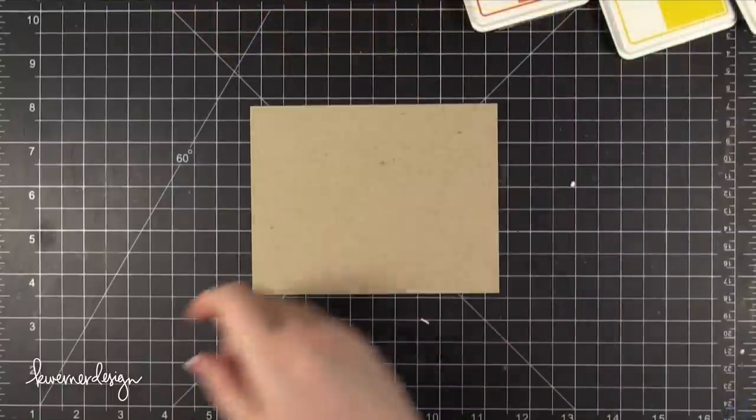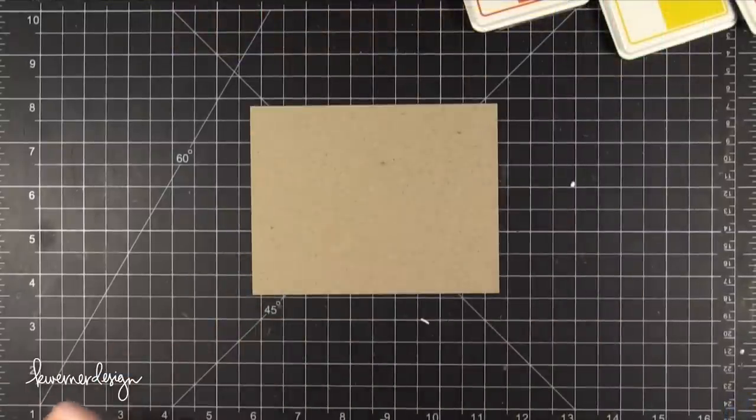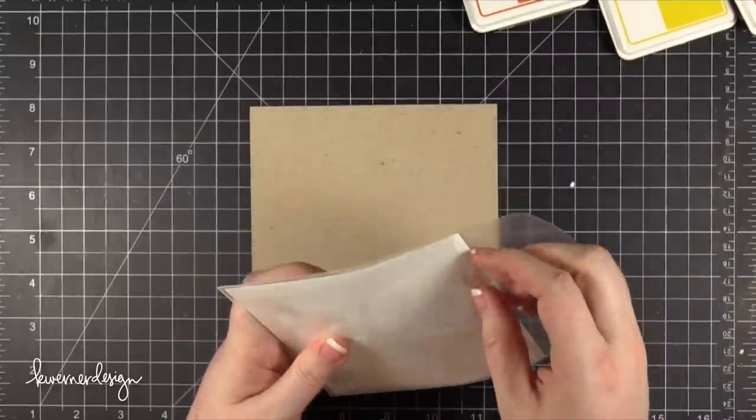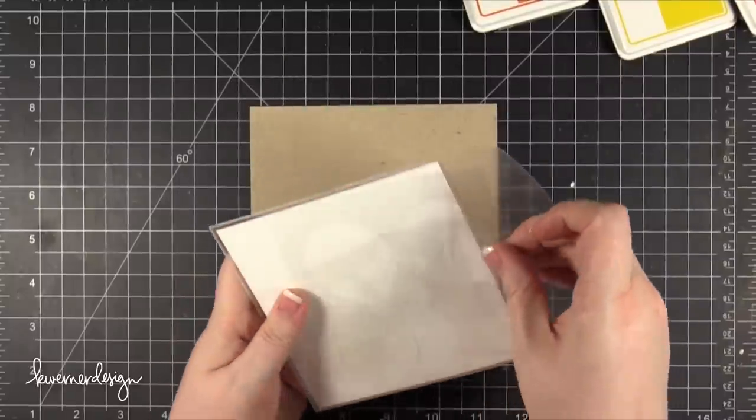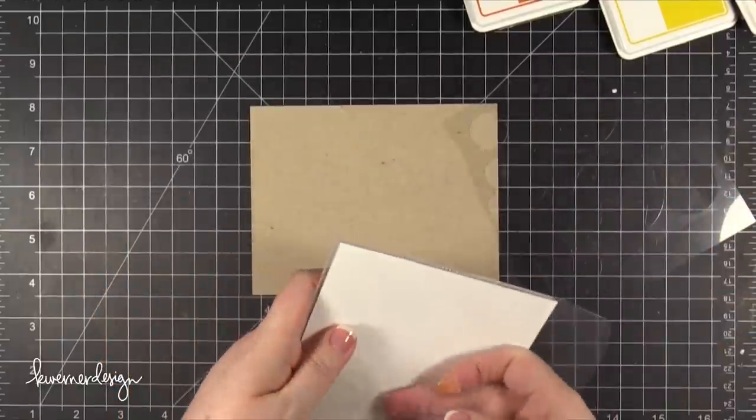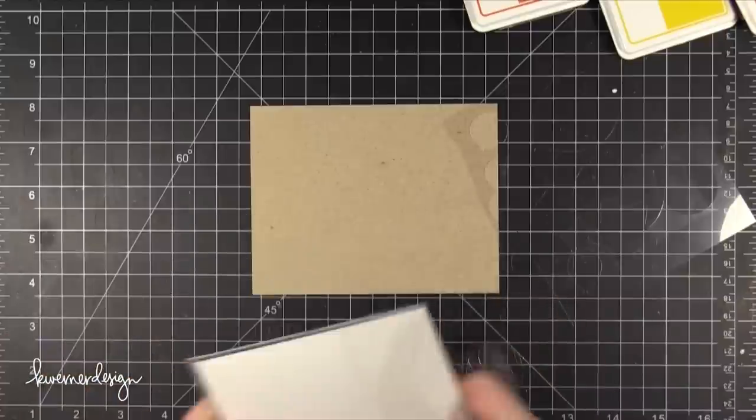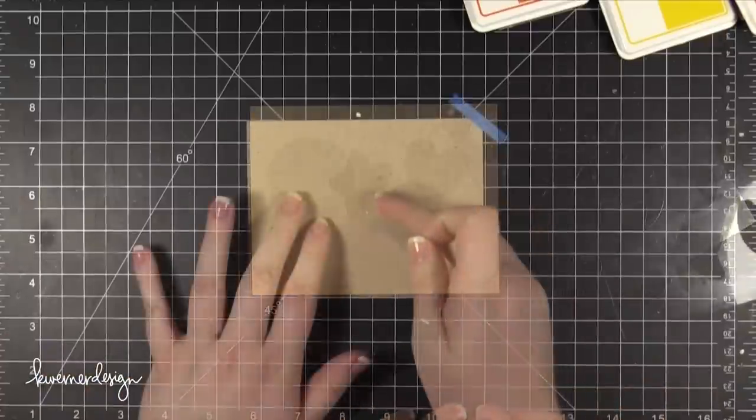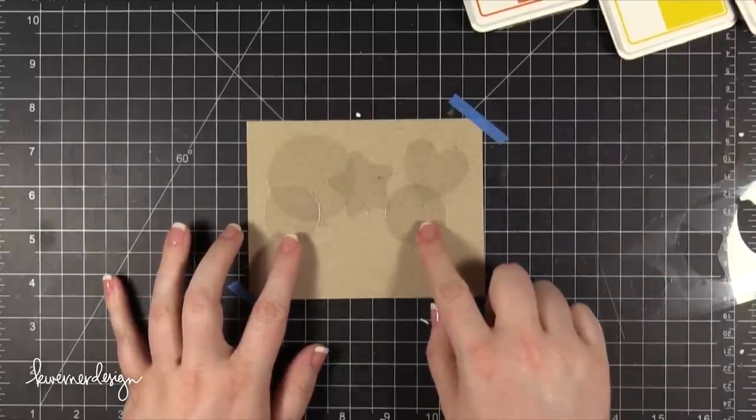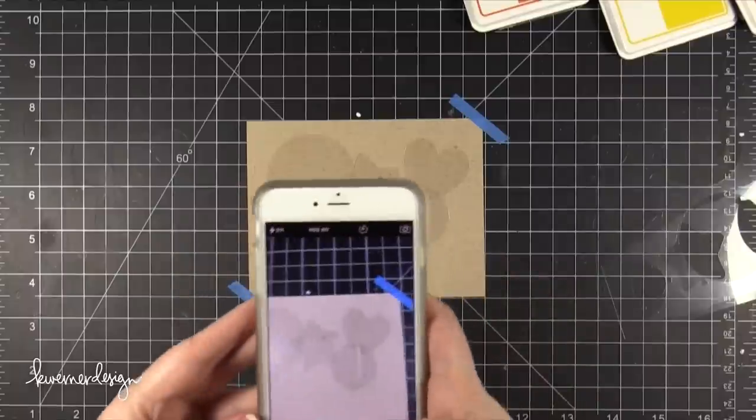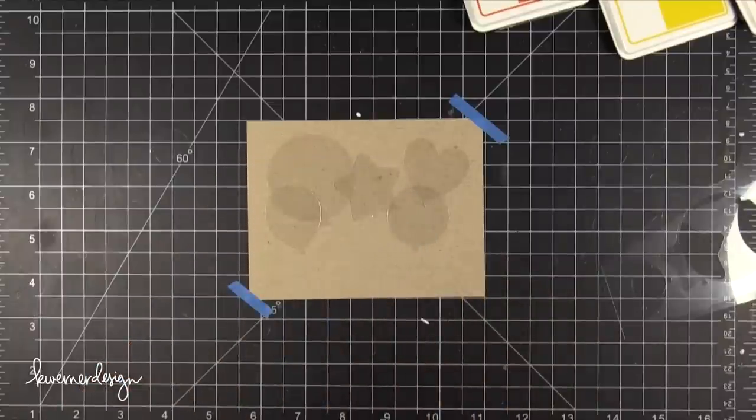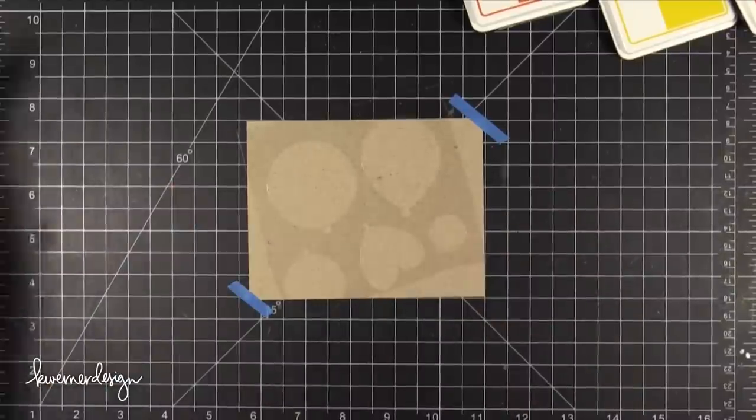I'm starting out with some Neenah Desert Storm card stock and I've created some DIY stencils using the Party Balloons die set. I just took some Clear Transparency—this happens to be a Lifestyle Crafts window sheet—and I cut out all of those balloons. I saved the balloon pieces so that I could kind of get an idea of how I wanted these balloons to be stenciled on. I took a picture of it because I always forget where everything was. So I took a picture on my phone and just had that off to the side while I did some stenciling.